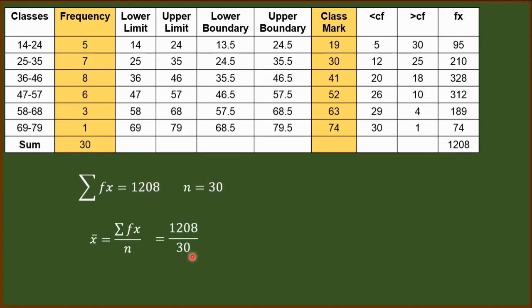So we have 1,208 divided by 30, which will give us a quotient of 40.266 and so on. But we have to round it off to the nearest hundreds, meaning our mean is 40.27.